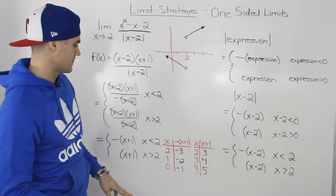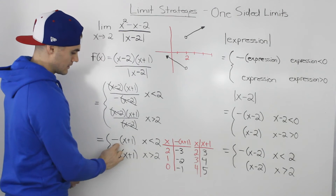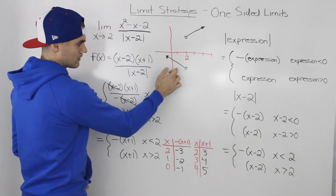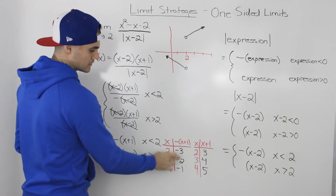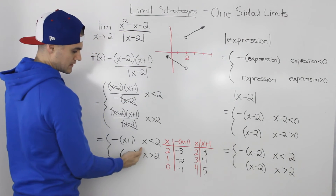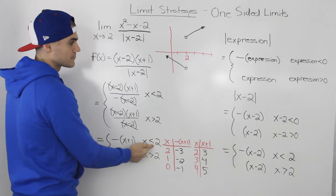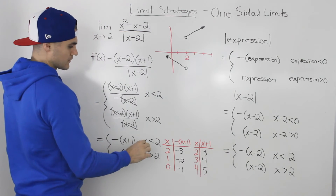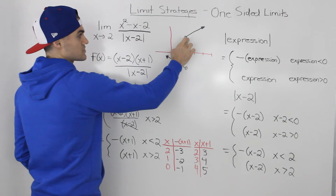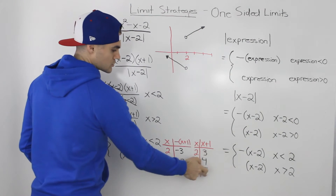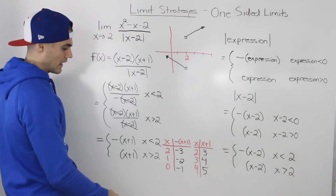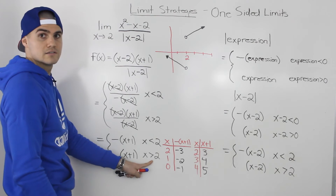Taking this piecewise function and graphing it using those coordinates: the line negative (x plus one) for x less than two is plotted, with a hole at x equals two since it's not defined there. Similarly, the line x plus one for x greater than two is plotted, also with a hole at x equals two.